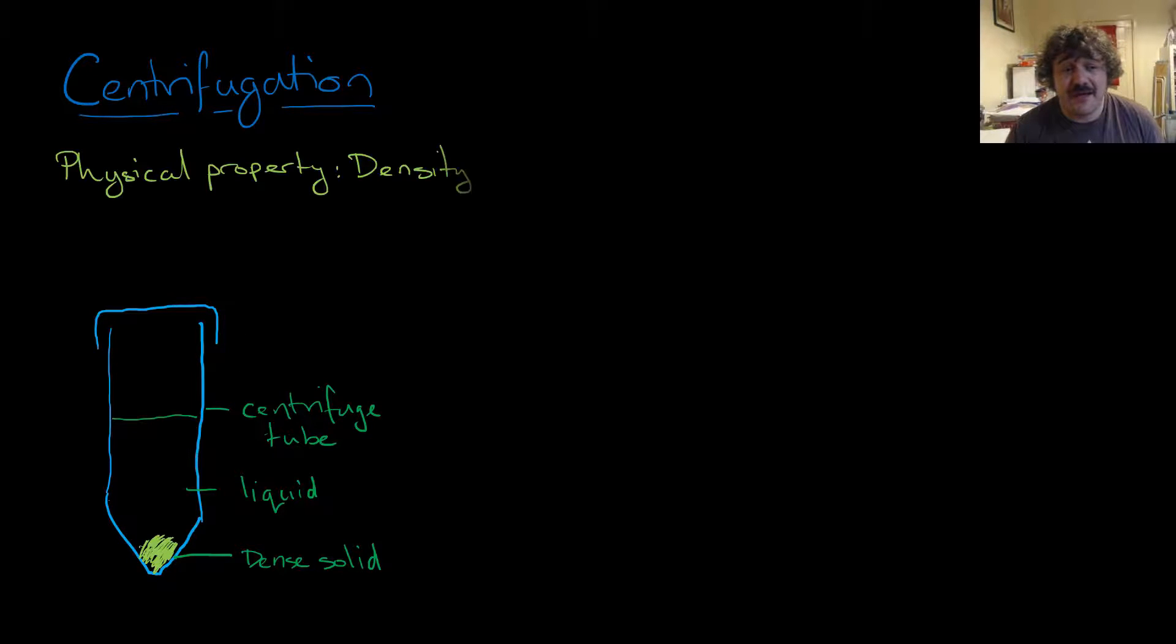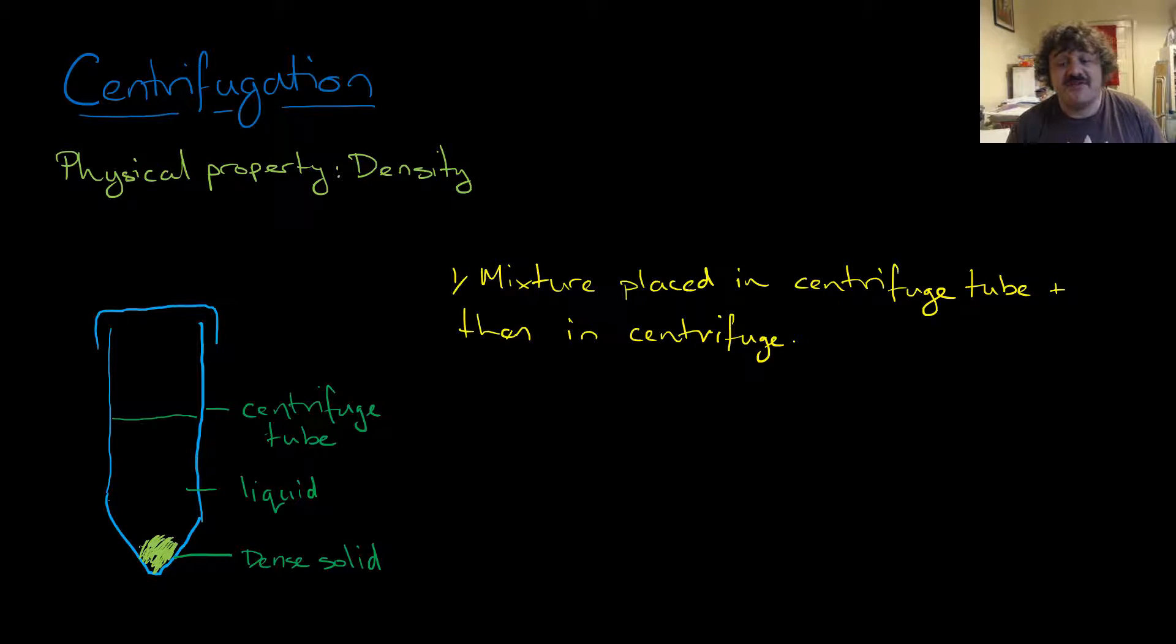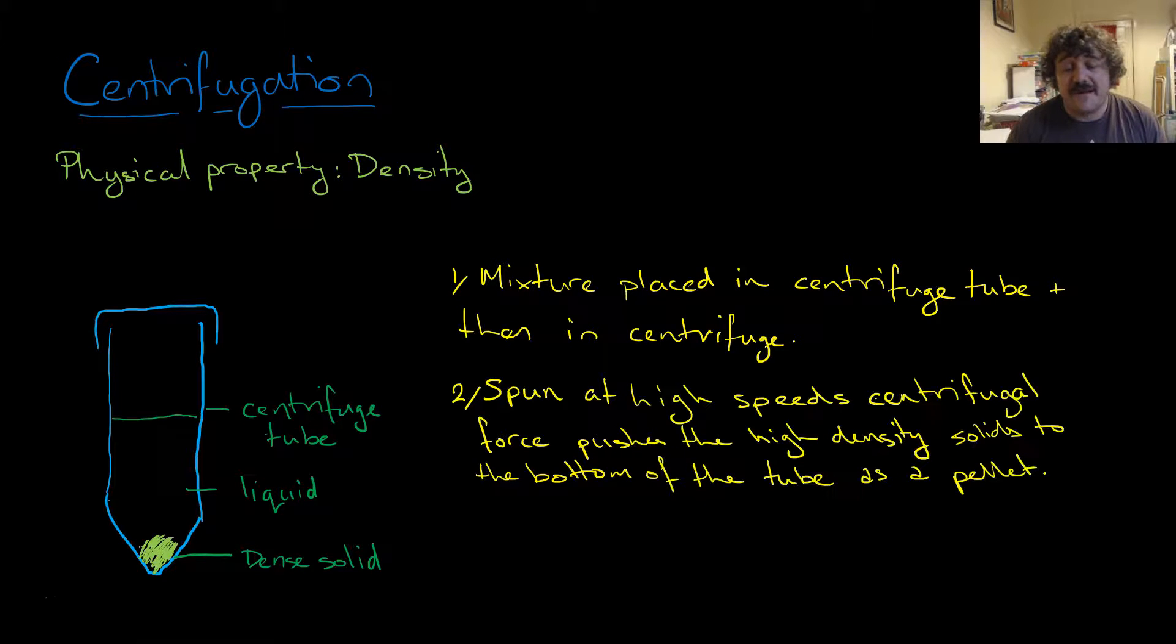Basically, centrifugation is the first one we'll look at. The physical property used to separate them is density. And there is a force which is used here. It is the centrifugal force. So the mixture is placed in a centrifuge, it's placed in a centrifuge tube, which is this one over here and then it's put in the centrifuge. Now it is spun at a very high speed and centrifugal forces push the more dense, heavier solid towards the end.